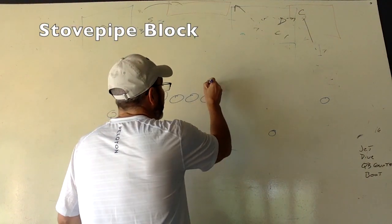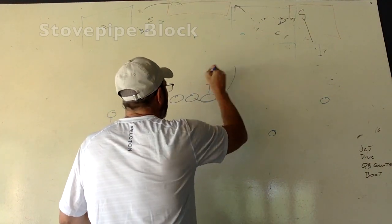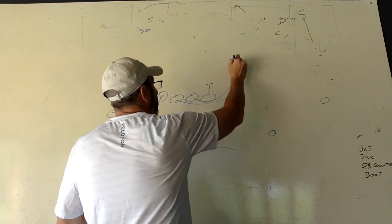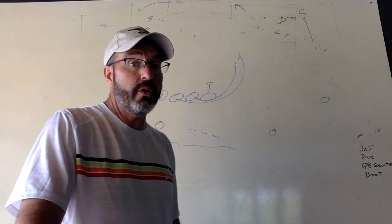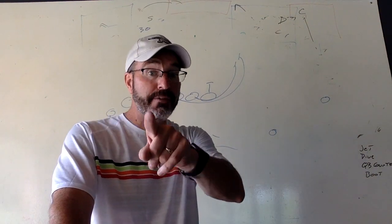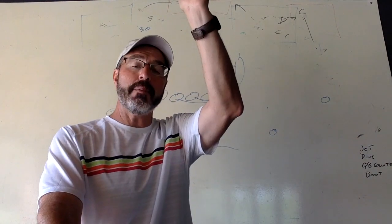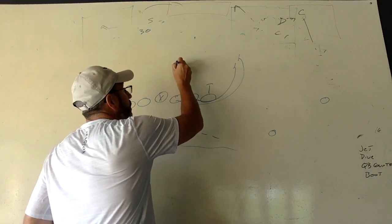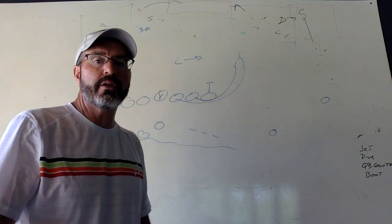That's where the tight end is going to block on, and you and our tackle are going to go flat and fast. Remember? Flat and fast. And you're going to curl up into that stove pipe looking for linebackers coming across.